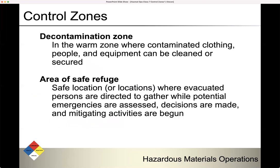Let's talk about some more definitions. The decontamination zone is the warm zone where contaminated clothing, people, and equipment can be cleaned or secured. An area of safe refuge is a safe location — or multiple locations — where evacuated persons are directed to gather while potential emergencies are assessed, decisions are made, and mitigating activities are begun.